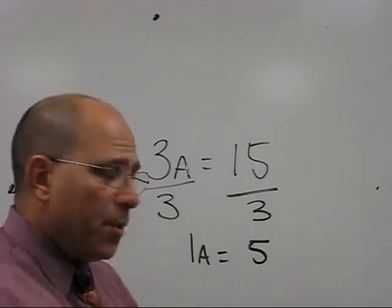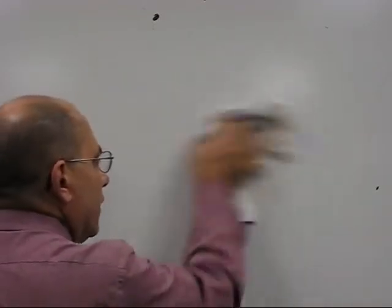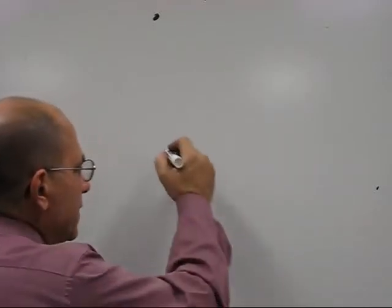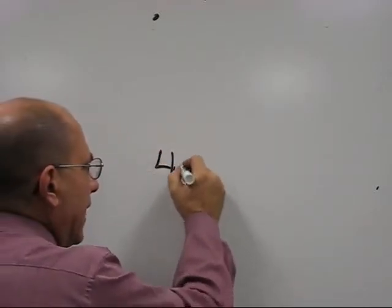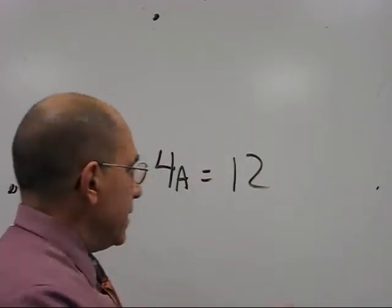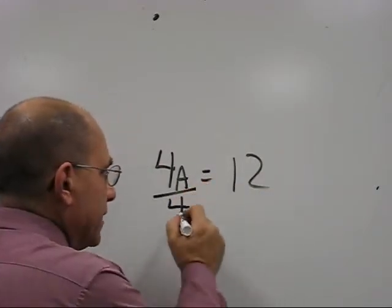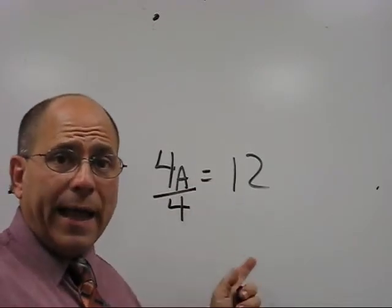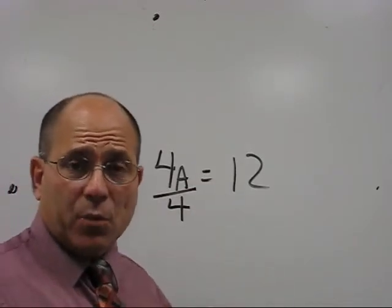Now, suppose you had one, this is kind of review. It says something like 4a equals 12. What you would do in this case is you would divide 4 by itself so that it equals 1a. We want to know what 1a equals. What a equals.